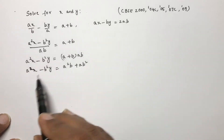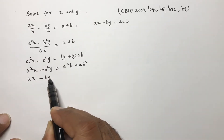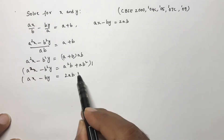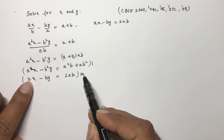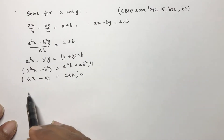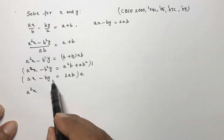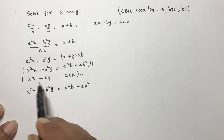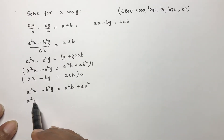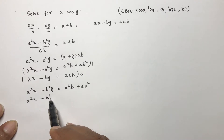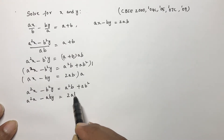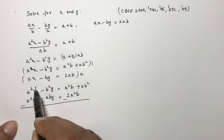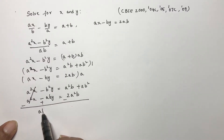The second equation is ax minus by equals 2ab. To eliminate, multiply the first equation by 1 and the second equation by a, so it becomes a squared x minus aby. Subtracting the two equations to eliminate a squared x.